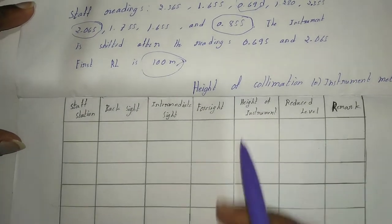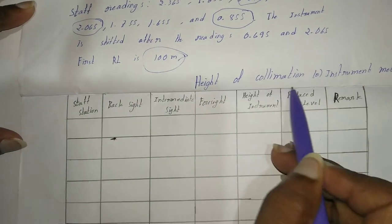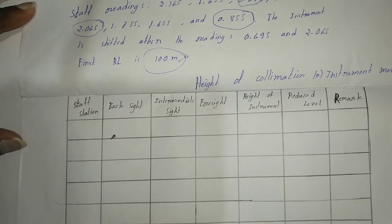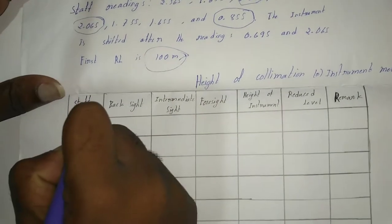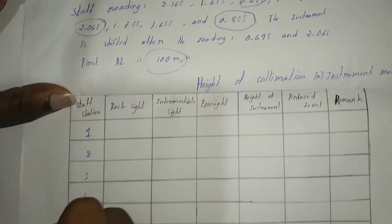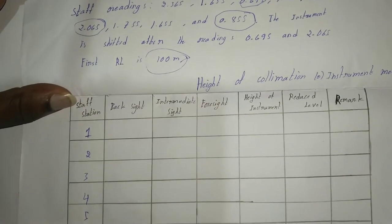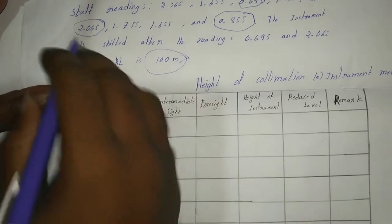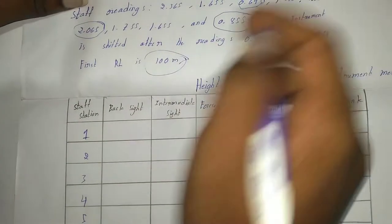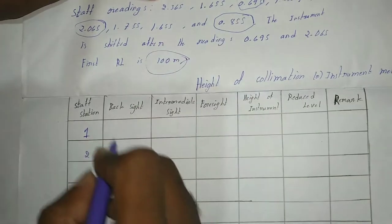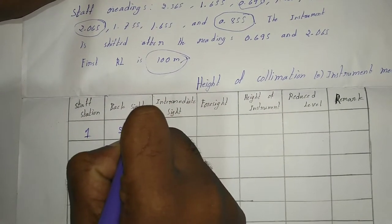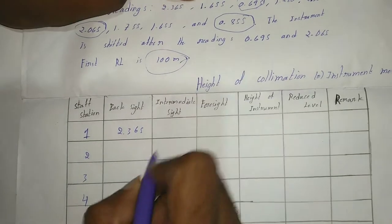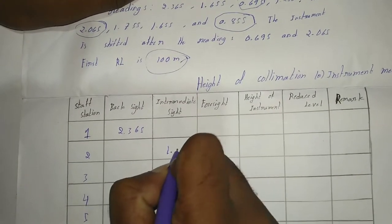Now we solve this problem in height of instrument method or height of collimation method. Use the stationings 1, 2, 3, 4, 5, 6, 7.